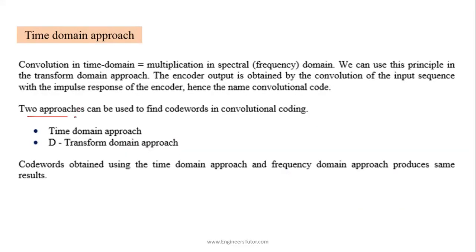Two approaches can be used to find codewords in the convolutional encoding process. For a given convolutional encoder we can use either a time domain approach or a transform domain approach. We can also find these codewords or output of the encoder from state diagram, trellis diagram, and tree or coterie diagrams.